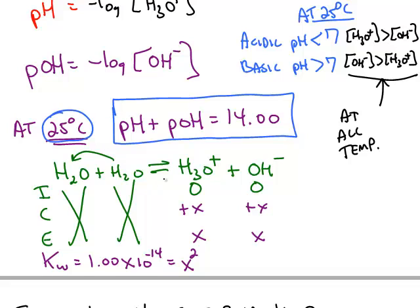So if we want to calculate the pH of pure water, we need to write out the ice chart. Water plus water. Doesn't matter which chemical acts as the acid, which one acts as the base in this case. We cross out both of those columns because H2O liquid doesn't appear in K.